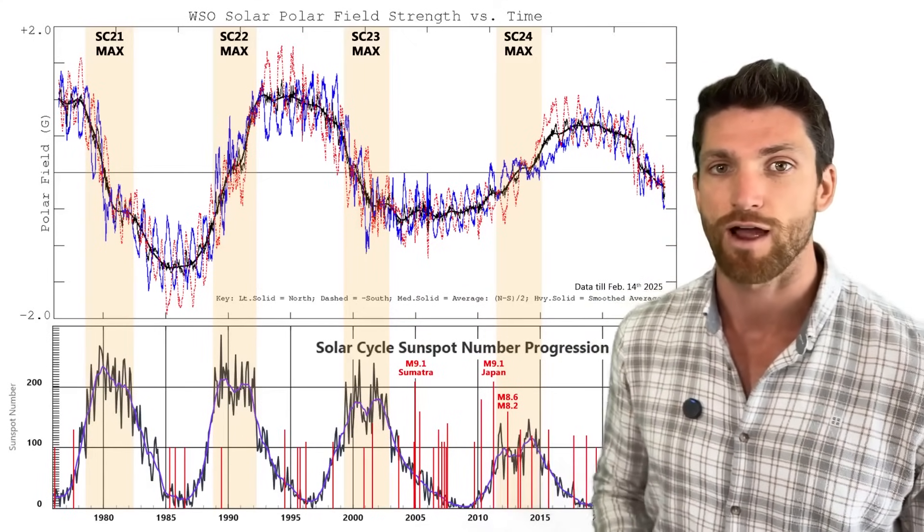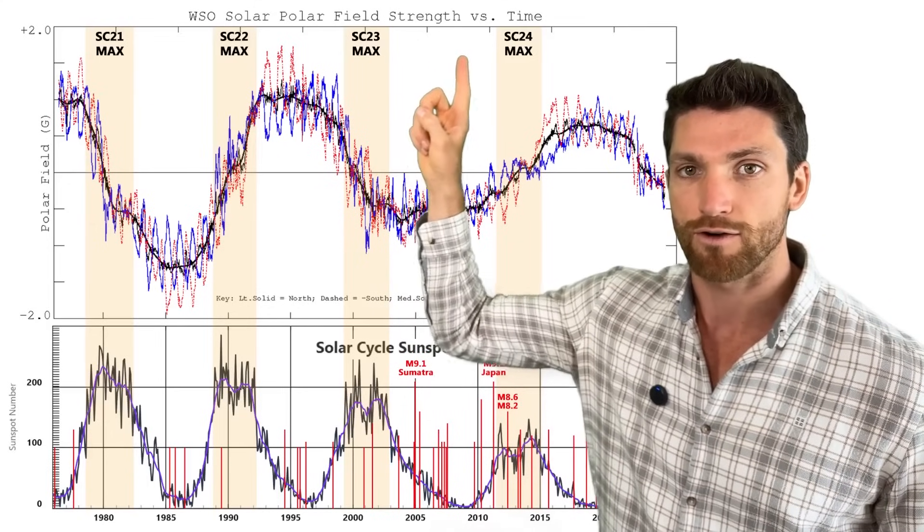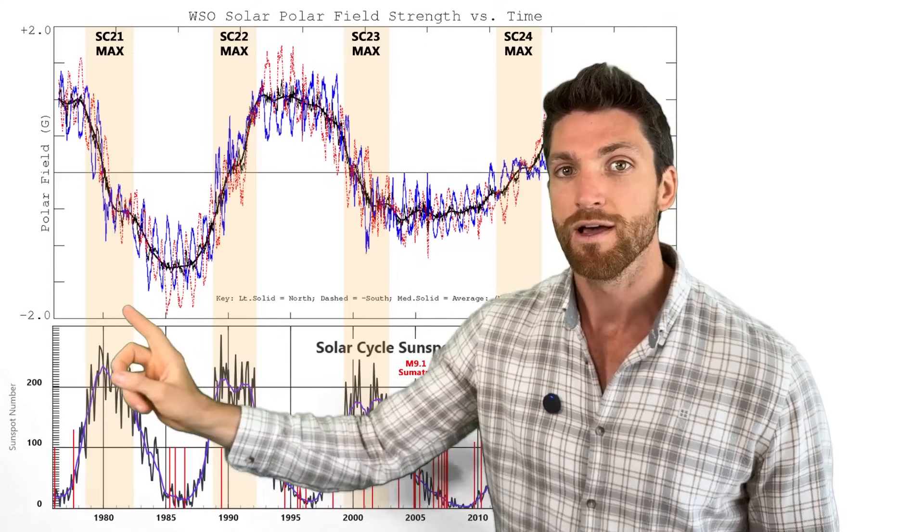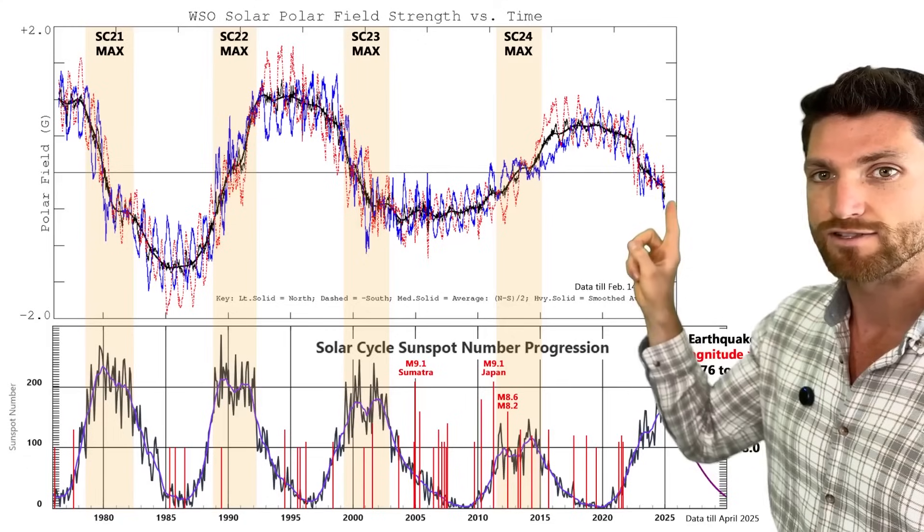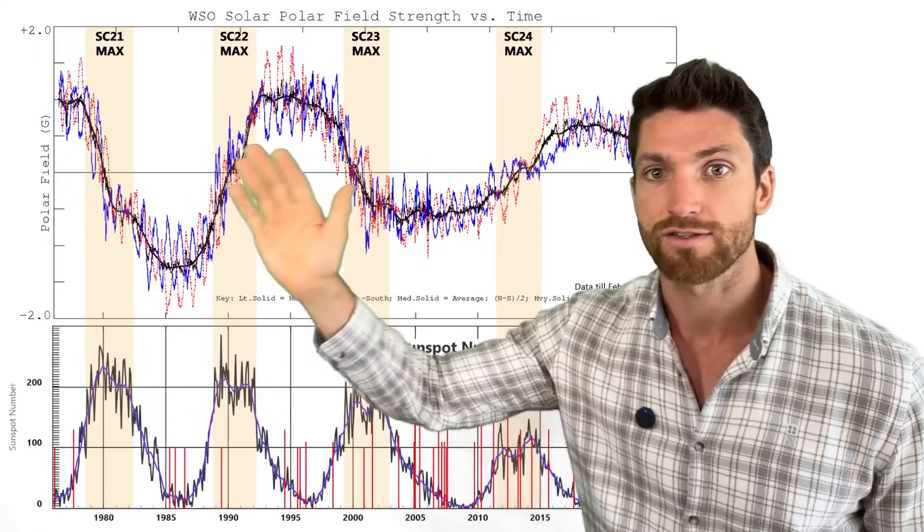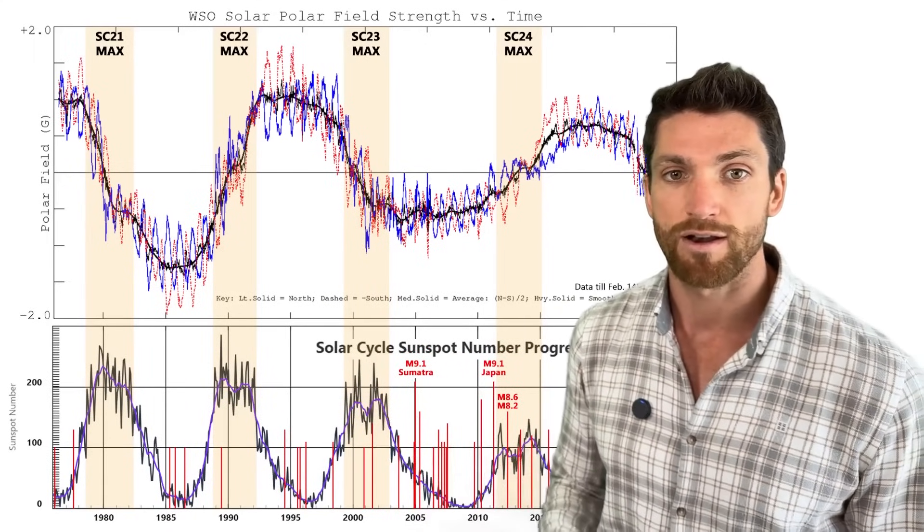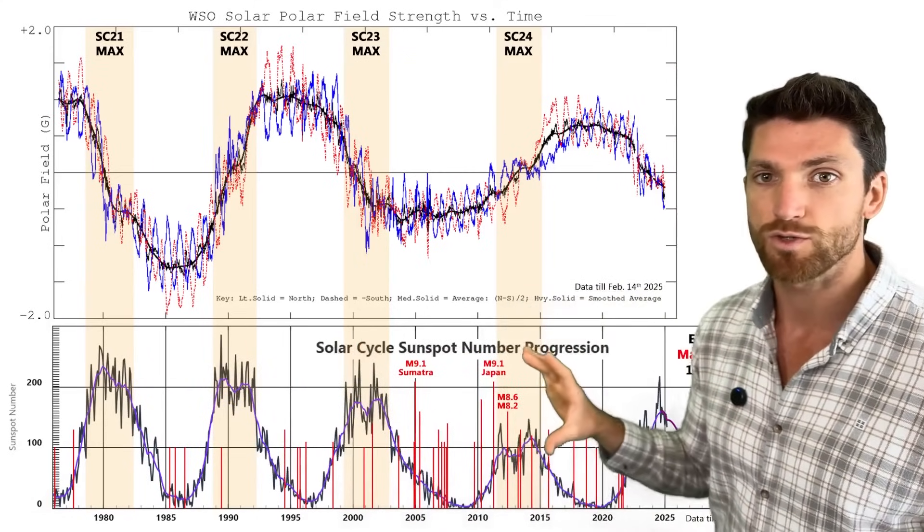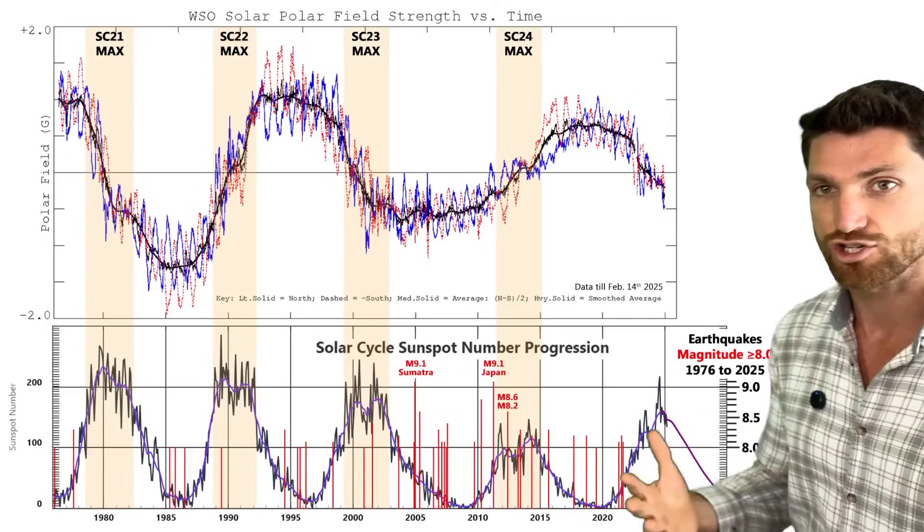And so here we have a composite data graphic that I created. We have our solar polar field strength across time up top. This is about 50 years of data going from January 1st, 1976, all the way to the end of 2025. So we don't have the data yet for the months of March through the rest of 2025. We also have sunspots down below. This is our NOAA sunspot number and we see solar cycle 21 here, 22, 23, 24, and what we have for 25. This is the prediction line there. We'll see how that plays out across time.